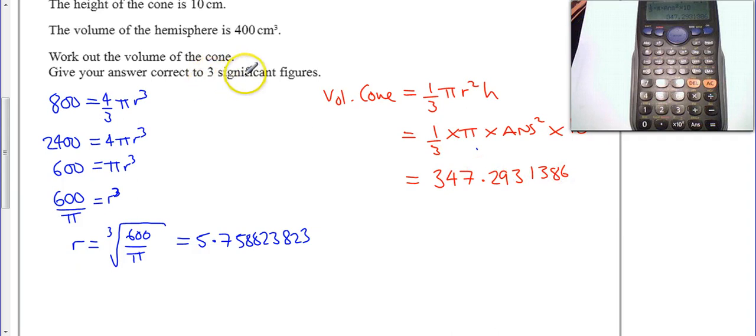It asks us for 3 significant figures. So my final answer is 1, 2, 3. The 2 doesn't round it up, so it's just 347 centimeters cubed. Done.